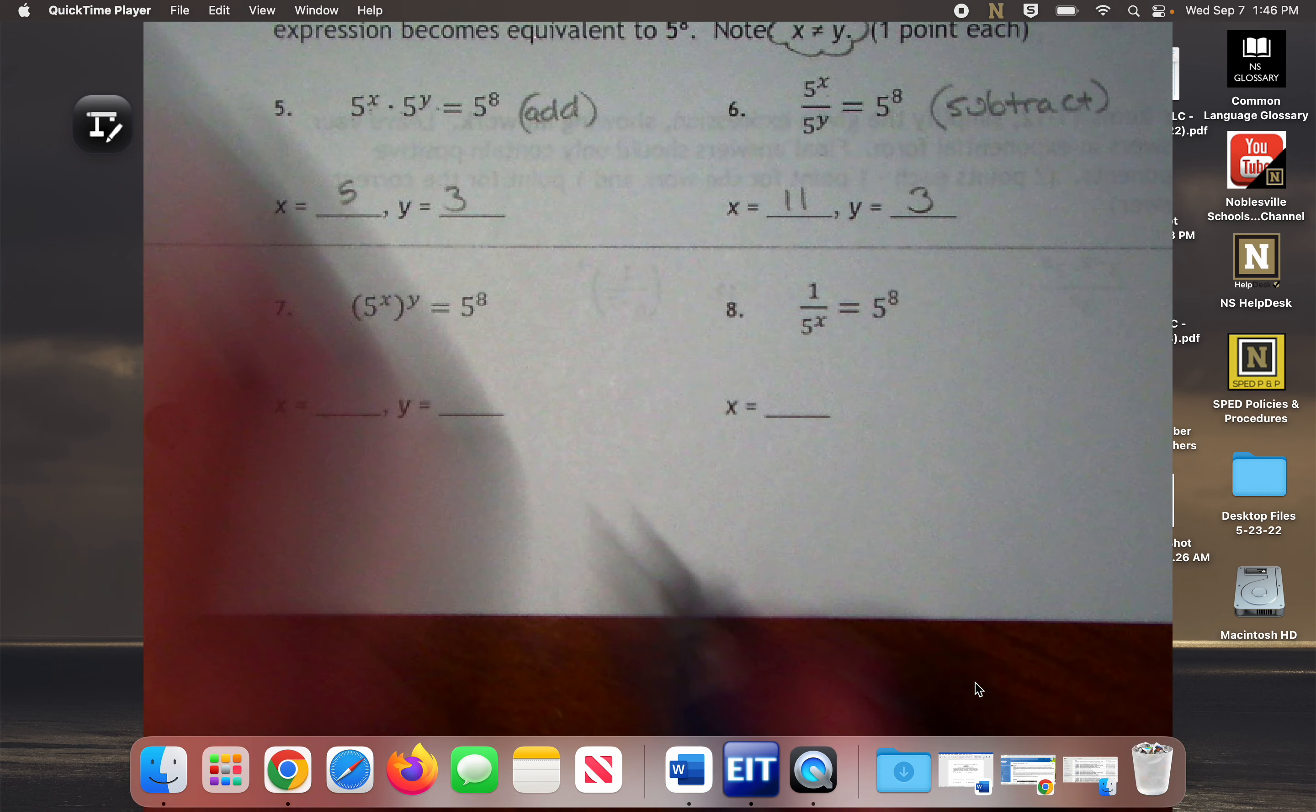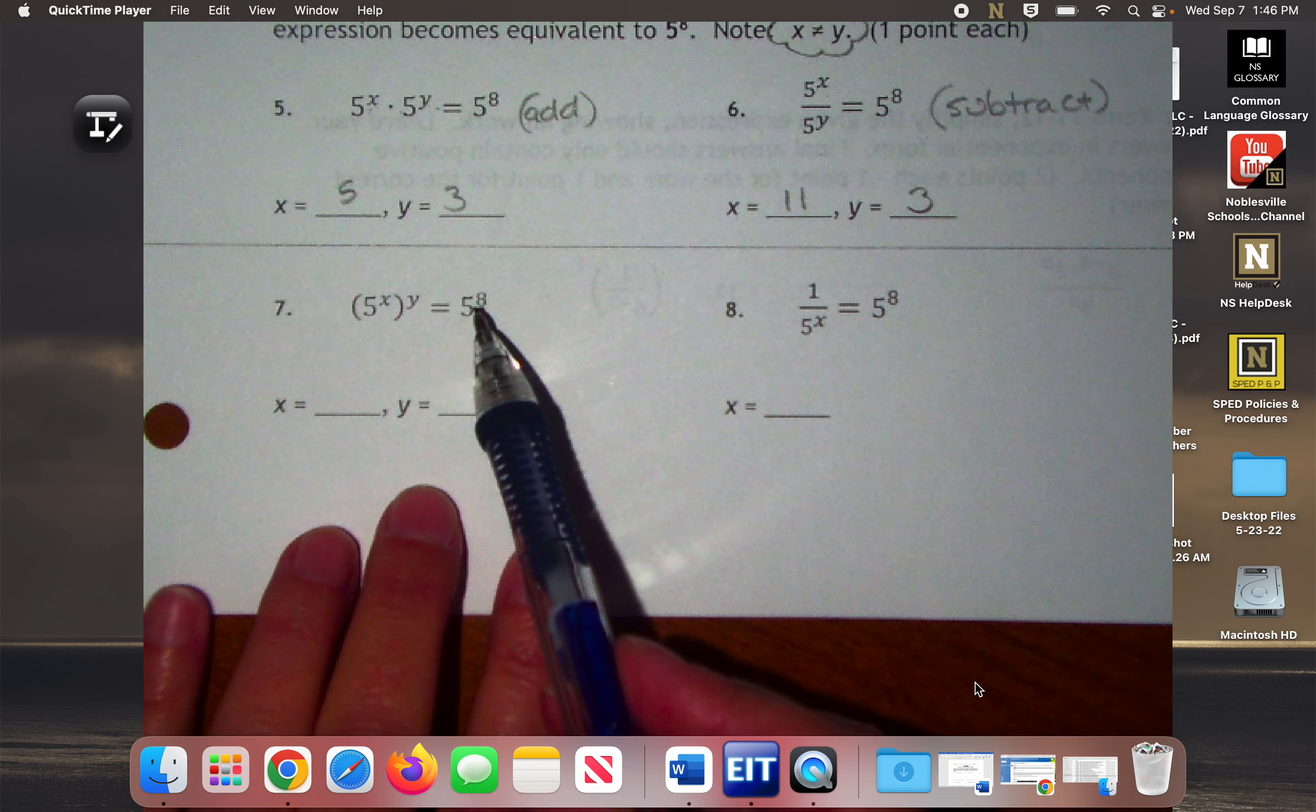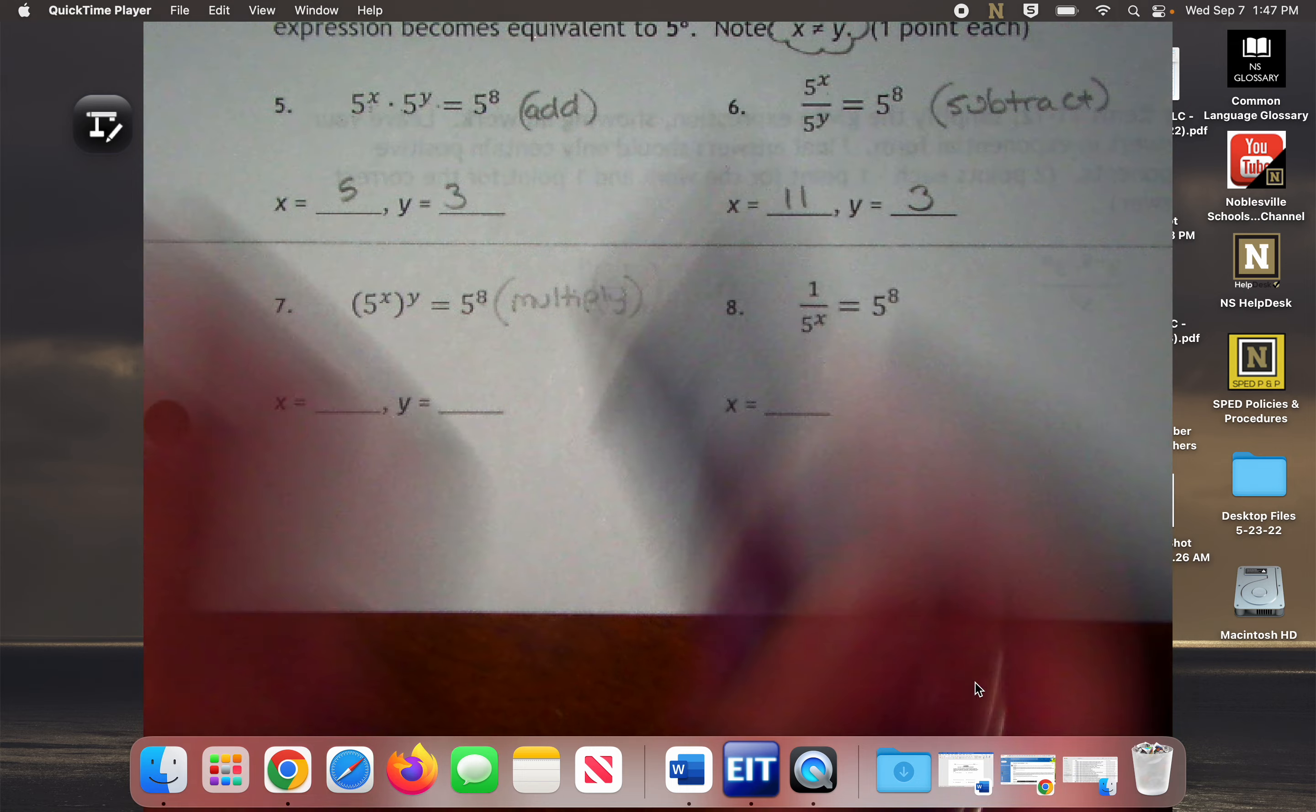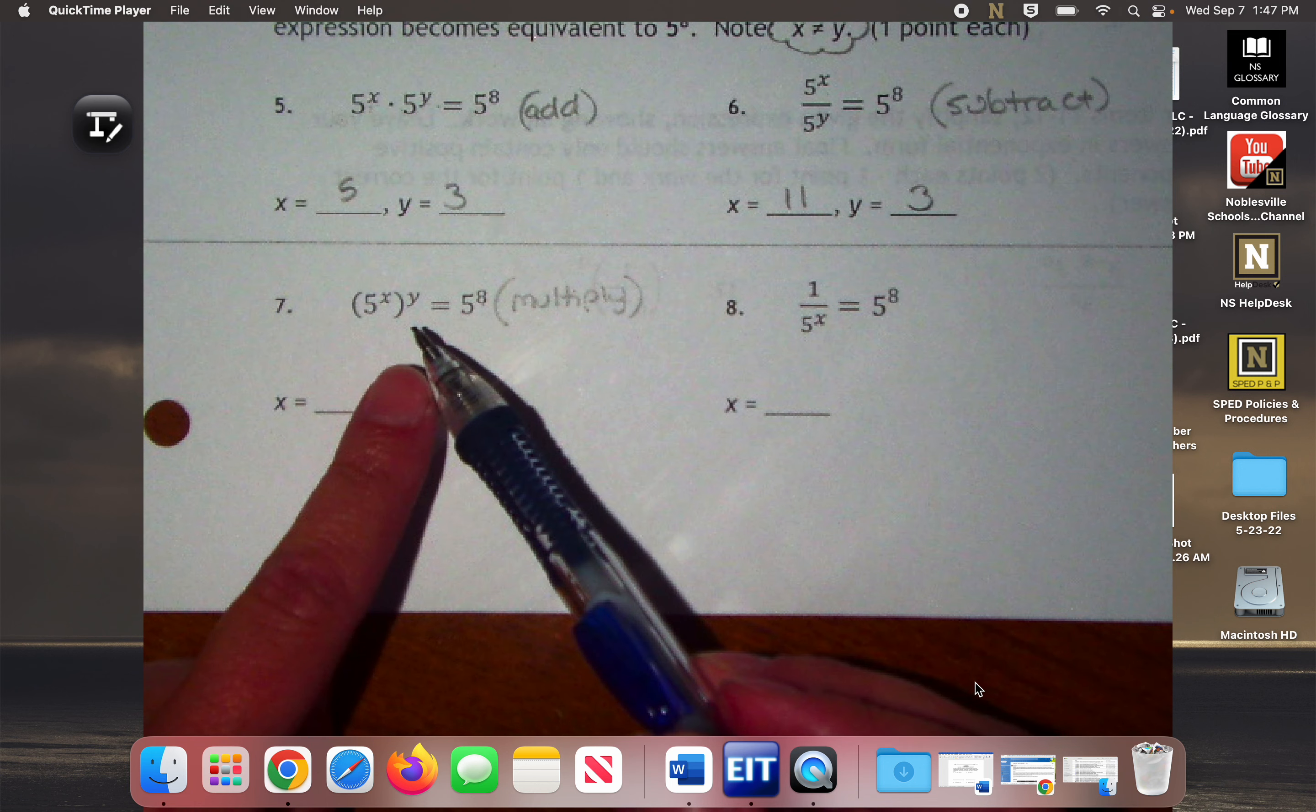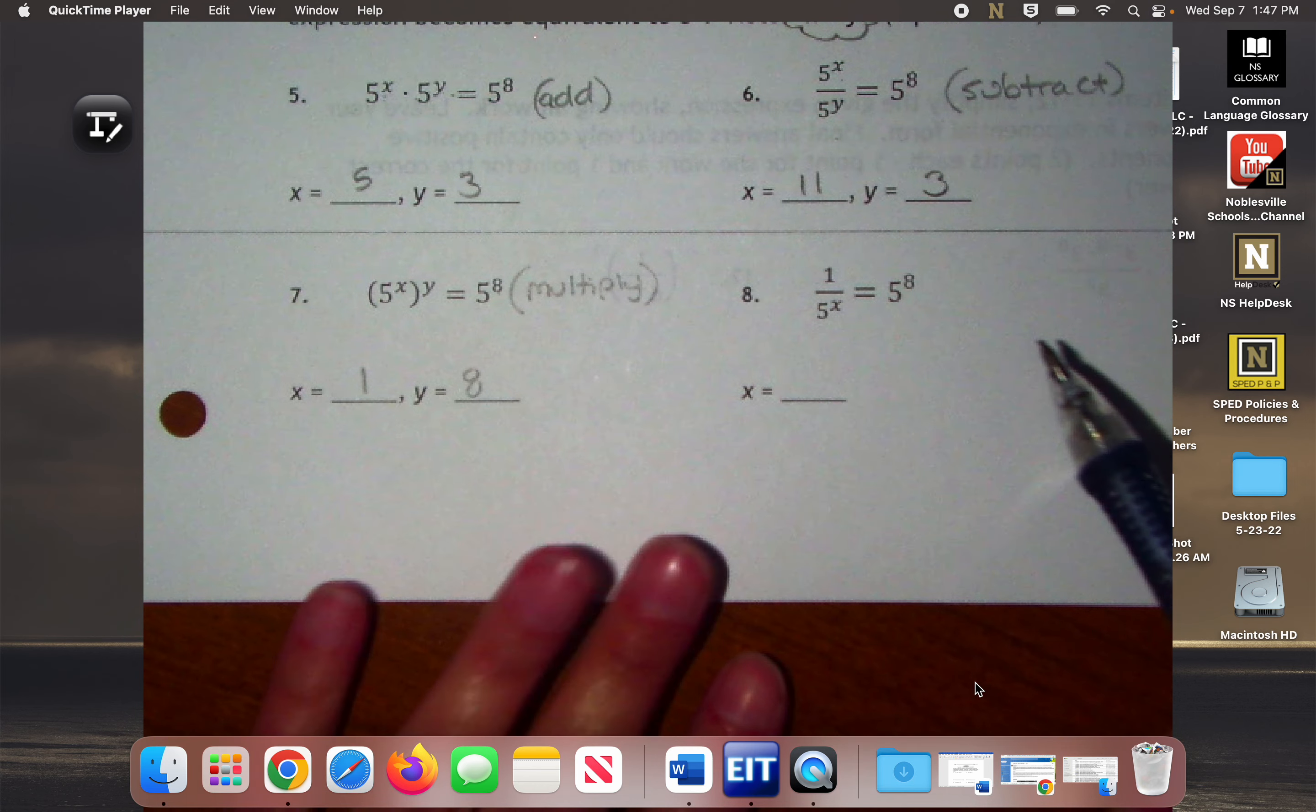Now we get down to number 7. This is the power rule. What am I going to do with this X and Y to get to 5 to the 8th? Multiply. So there's only a couple combinations I can do here. You're kind of limited. 4 and 2, 8 and 1. And this doesn't matter which is which because multiplying in any order.